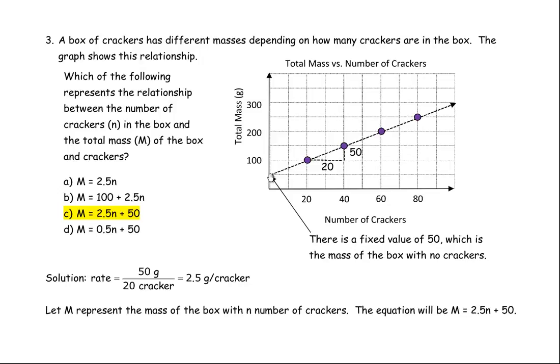The scale in the vertical axis, each block is 50. So it's 50, 100, 150, 200, etc. So that's the fixed value or the vertical intercept or the mass intercept.